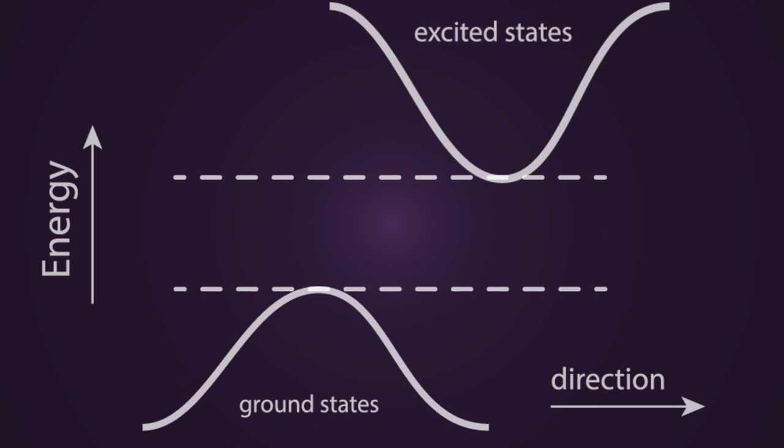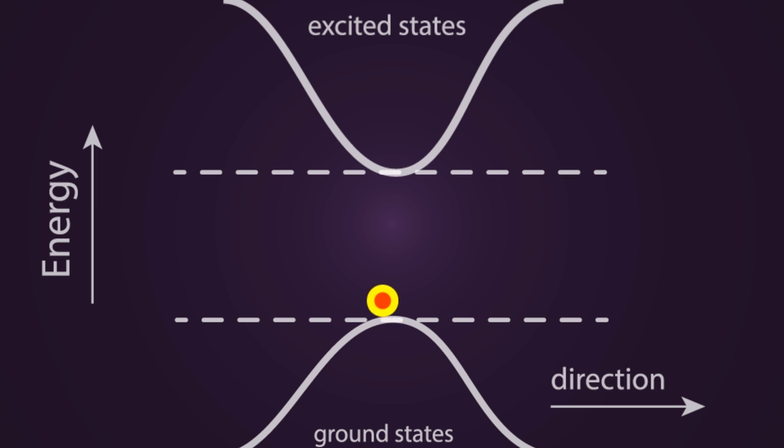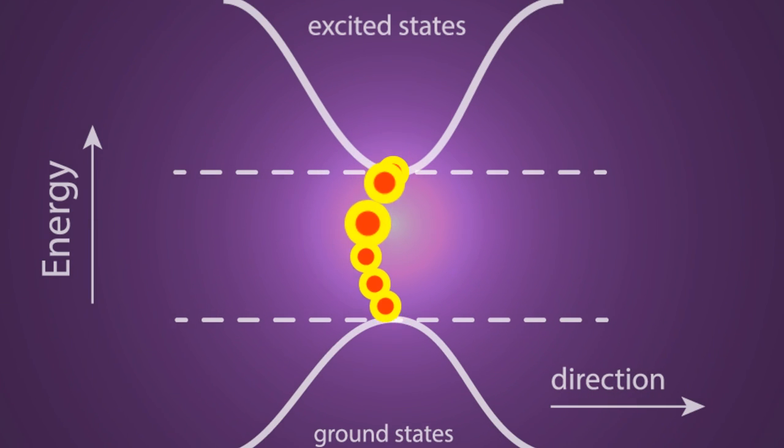For single-layered TMD sheets, the indirect gap shifts to become a direct gap. In this case, an electron only requires energy to move to the excited state, resulting in a greater overall interaction with incident light.